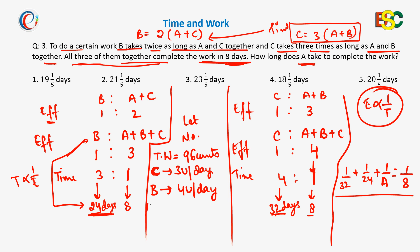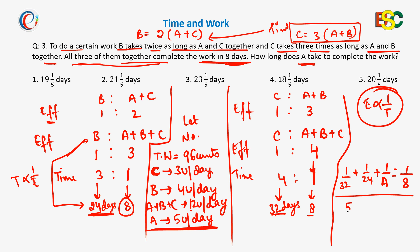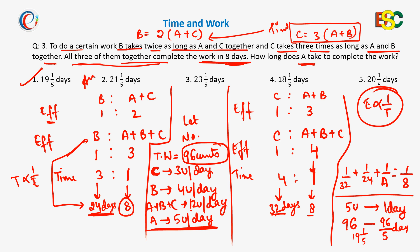A, B, and C together complete the work in 8 days, so together they complete 12 units of work per day. Therefore, A does 12 minus 4 minus 3, which equals 5 units of work per day. Since the total work is 96 units, A alone will complete it in 96 divided by 5 days, which equals 19 and 1/5 days. Option number one is the correct answer.